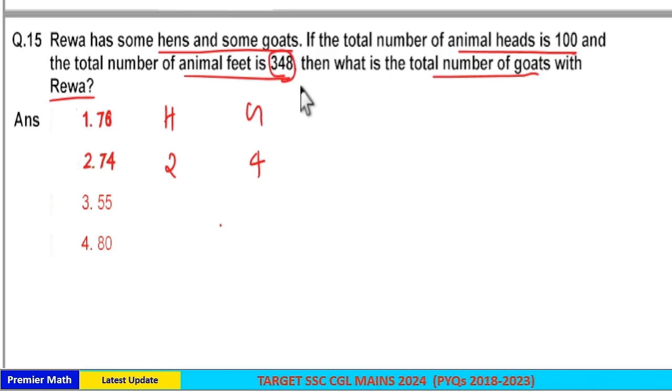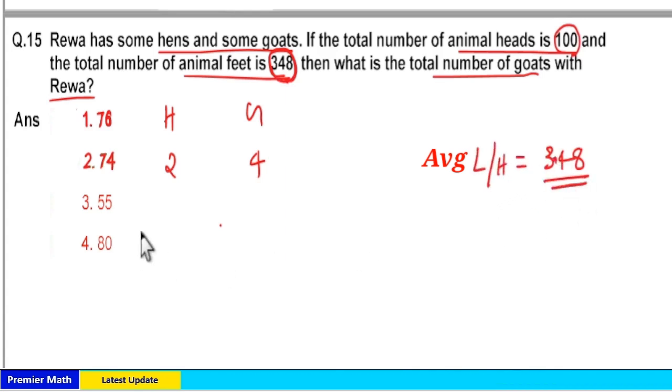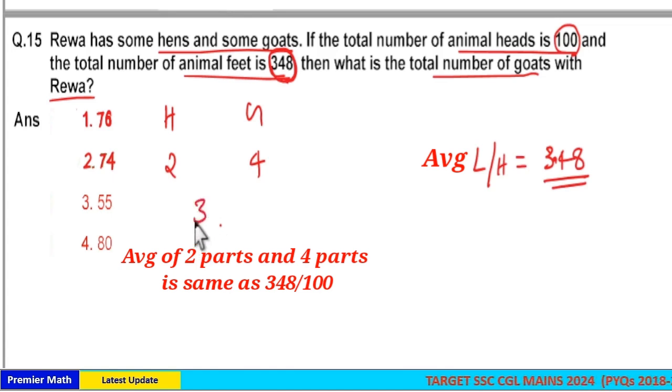Now if you take the average of 348, that is average equals 348 divided by total number of animals, which is 348 by 100, that is 3.48. That is, average legs per head equals 3.48, which is the average of these 2 and 4.